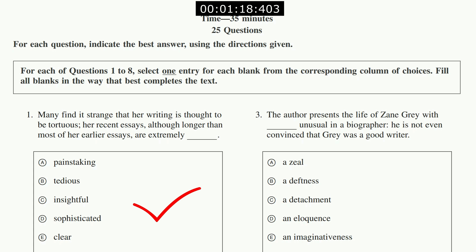The author presents the life of Zane Grey with unusual in a biographer—he is not even convinced that Grey was a good writer. The ending often gives away what we're looking for. So I'm predicting the author presents the life of Zane Grey with honesty or negativity, something like that. Detachment—so you would expect a biographer to be favorable and like the person, but this guy is unusually detached. He is not even convinced that he's a good writer. The ending can give away a lot, so always read to the end.